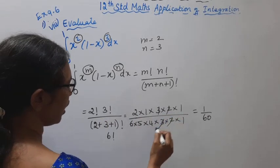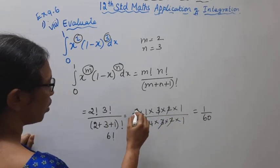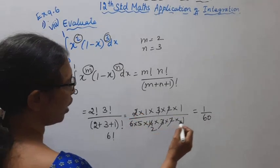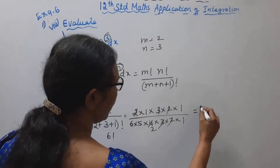3, 3 cancel, 2, 2 cancel, 2, 2 cancel. 2, 2 is 4, 6, 5 is 30, 3, 2 is 60. 1 by 60.